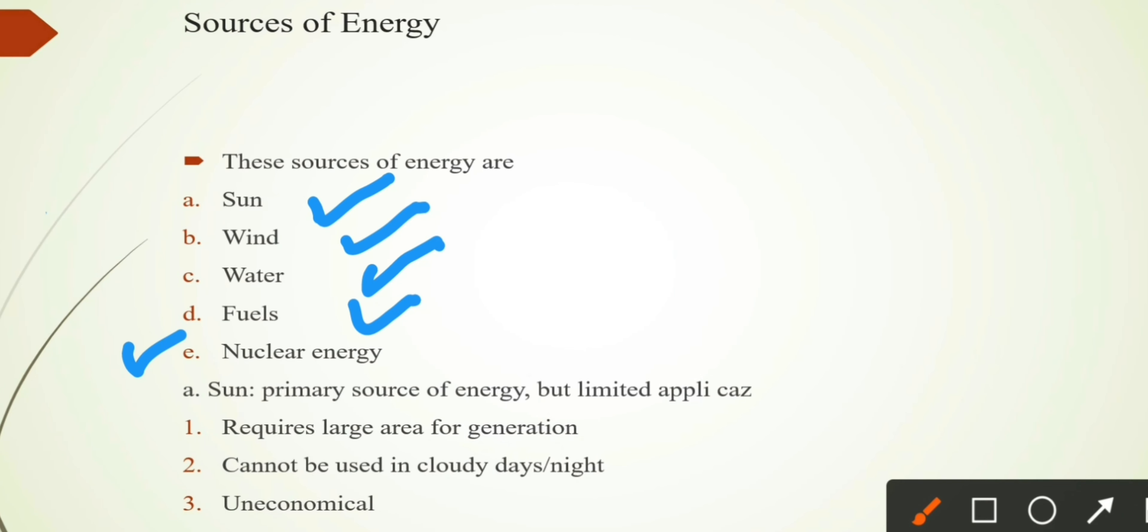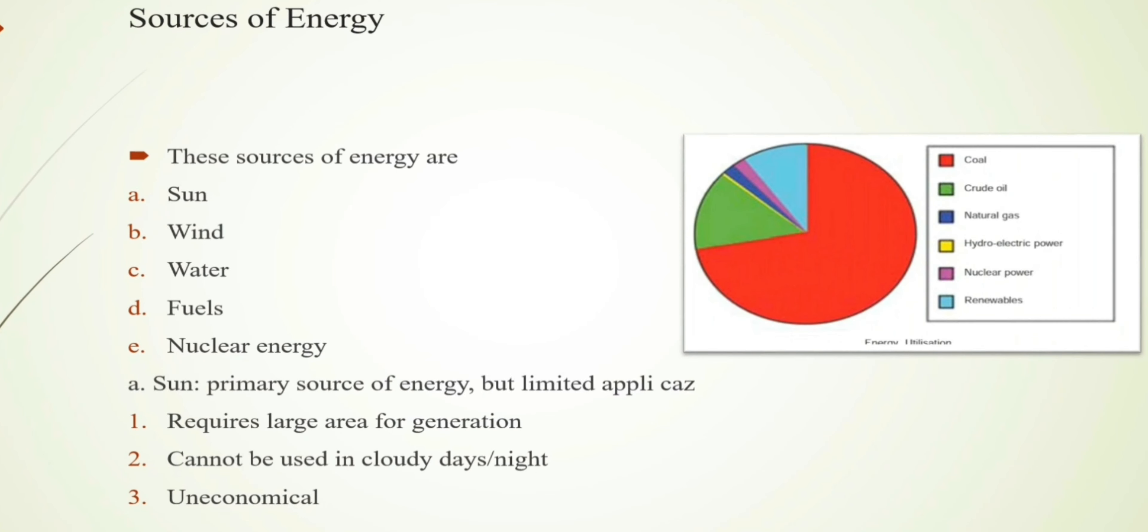Now nuclear energy. It's estimated that one kilogram of nuclear energy is equal to 4,500 tons of coal. The heat produced can be utilized to raise steam with suitable arrangement. The steam can run the steam turbine which in turn can drive the alternator to produce electrical energy.